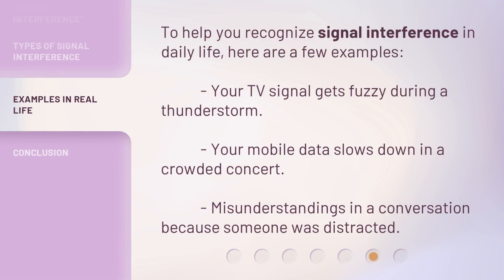To help you recognize signal interference in daily life, here are a few examples. Your TV signal gets fuzzy during a thunderstorm. Your mobile data slows down in a crowded concert. Misunderstandings in a conversation because someone was distracted.